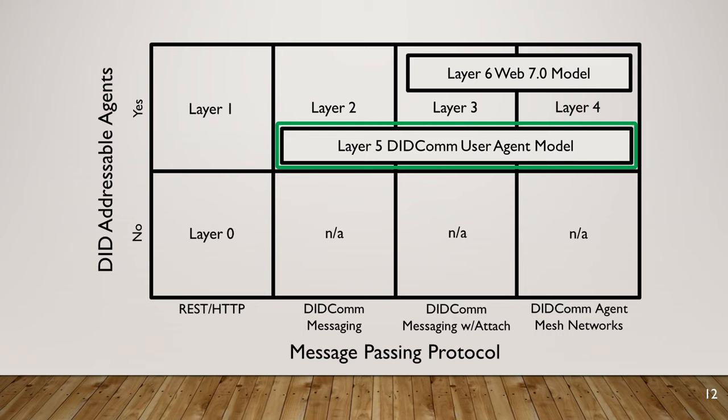Layer five illustrates specialization of DIDCOM agents. A particular type is the DIDCOM user agent — an agent that has a user interface and user experience, a DIDCOM app that enables people to interact with the network. Layer six is the Web 7.0 architectural model, where we flesh out the entire platform and add a number of key components in terms of fit and finish.